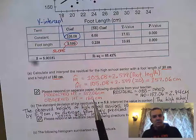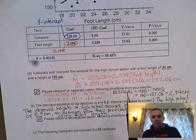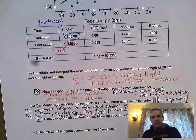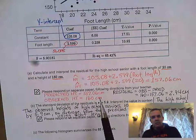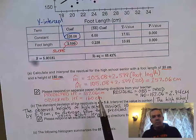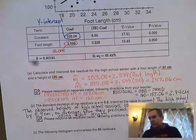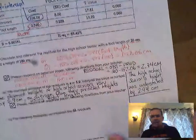We're going to take 160 minus 157.06 and we get 2.94 centimeters. Then we need to interpret it. What we ended up doing is we understated the high school senior's height by 2.94 centimeters.